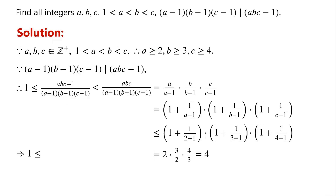So (abc - 1) / [(a-1)(b-1)(c-1)] is greater than or equal to 1 and less than 4. Thus it can only take values 1, 2, or 3. So we divide the problem into 3 cases.